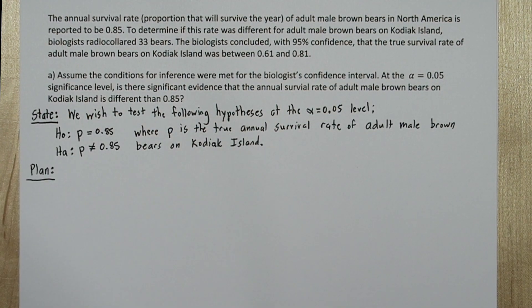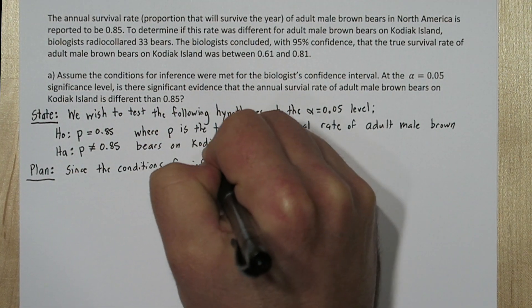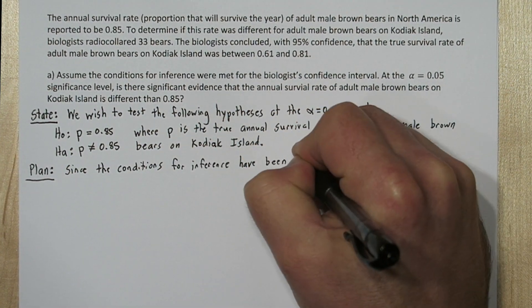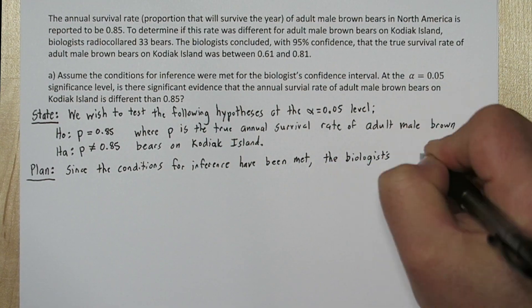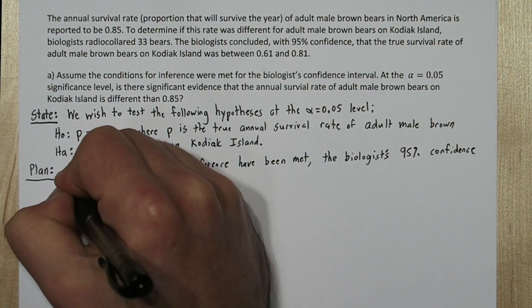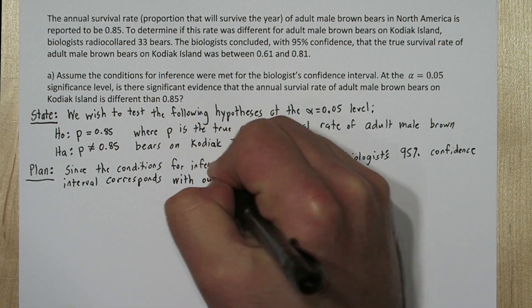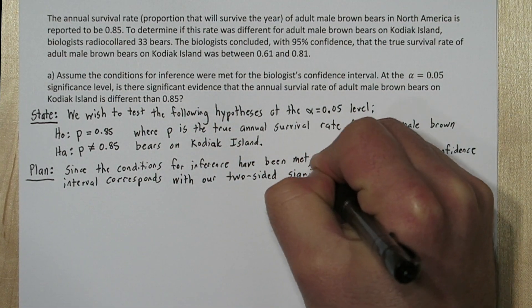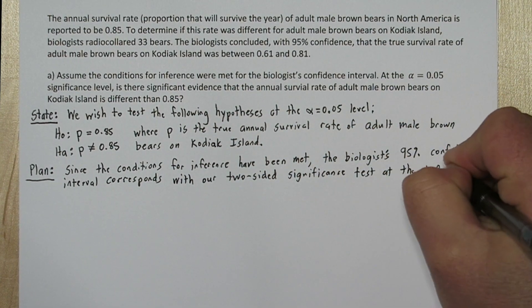For the plan step, we'll note that since the conditions for inference have been met, the biologist's 95% confidence interval corresponds with our two-sided significance test at the alpha equals 0.05 level.